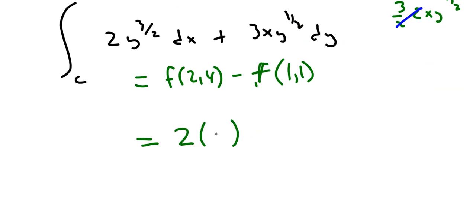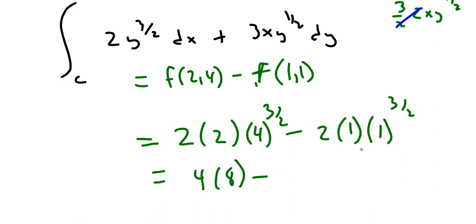So 2xy to the 3/2 minus 2xy to the 3/2. And so what do we have here? This would be 4 times 4 to the 3/2 is really 8. The square root of 4 is 2 and the cubed is going to be 8. And then you have minus 1 to the 3/2 is just 1 times 1 times 2 is 2. This is 32 minus 2 or just 30.